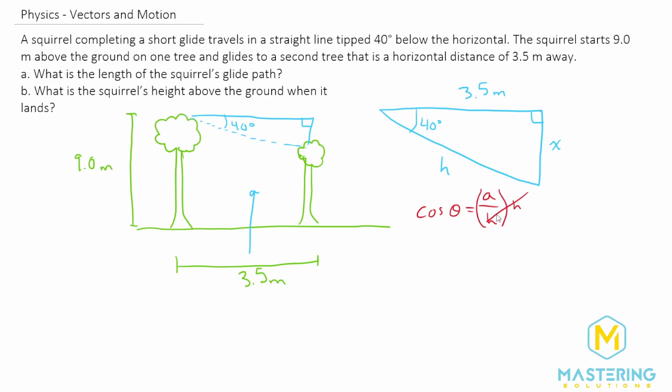So if we multiply both sides by H, that will give us adjacent is equal to H cosine of theta. And now we're going to isolate H by moving cosine theta over. So H is equal to adjacent divided by cosine of theta.